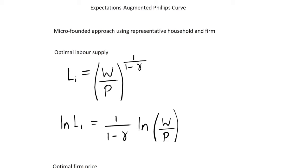We've talked in this video series about the importance of microfounding our approach — building up from the micro level using the optimality conditions of households and firms. We're going to continue to do that with our Phillips curve, and we talked about the reasons for this in our video on microfounding.